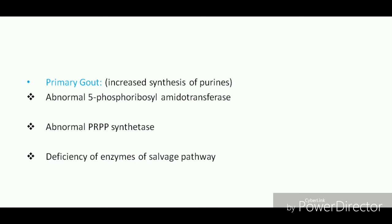The first abnormal enzyme is phosphoribosyl amidotransferase. This is the key enzyme of de novo synthesis of purines. In primary gout, it is not inhibited by the nucleotides AMP and GMP, which normally inhibit this enzyme by feedback inhibition.